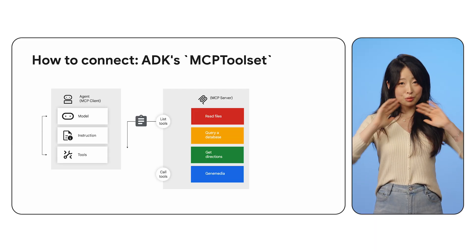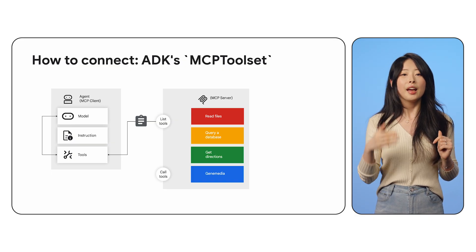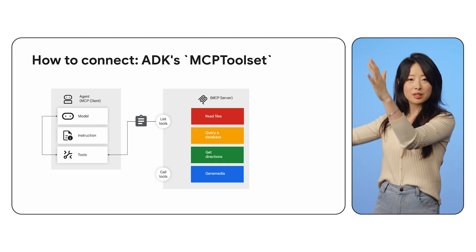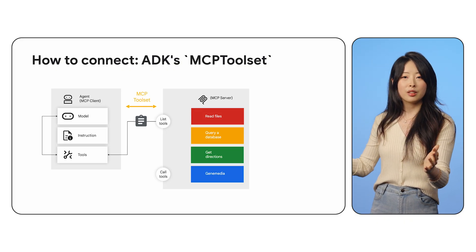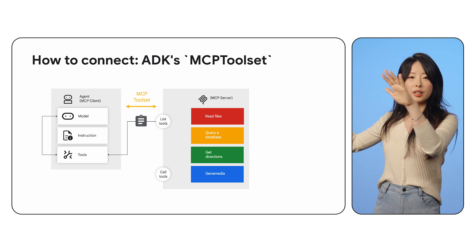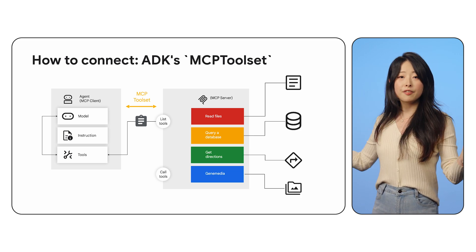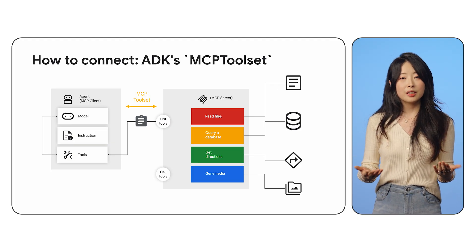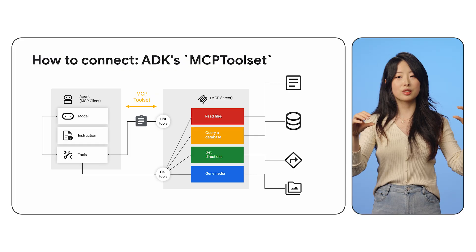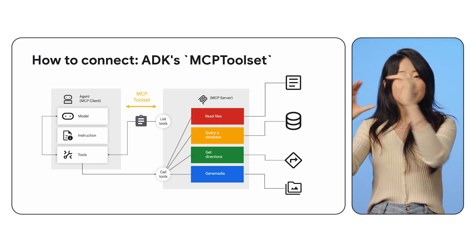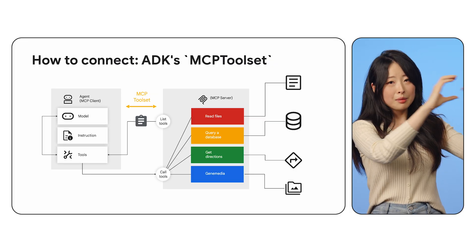The third part of this video is how to connect an ADK agent to an MCP server. ADK makes it really simple with something called the MCP toolset — think of it as ADK's built-in bridge to the MCP world. Here is what it does: first, it sets up the connection with the MCP server, which can be a local process or a remote HTTP server. Then it loads all the available tools from the MCP server, translates those MCP tools into ADK-compatible versions, and handles communication back and forth. When your agent decides to use an MCP tool, the MCP toolset forwards the request to the MCP server and sends the response back to your agent.